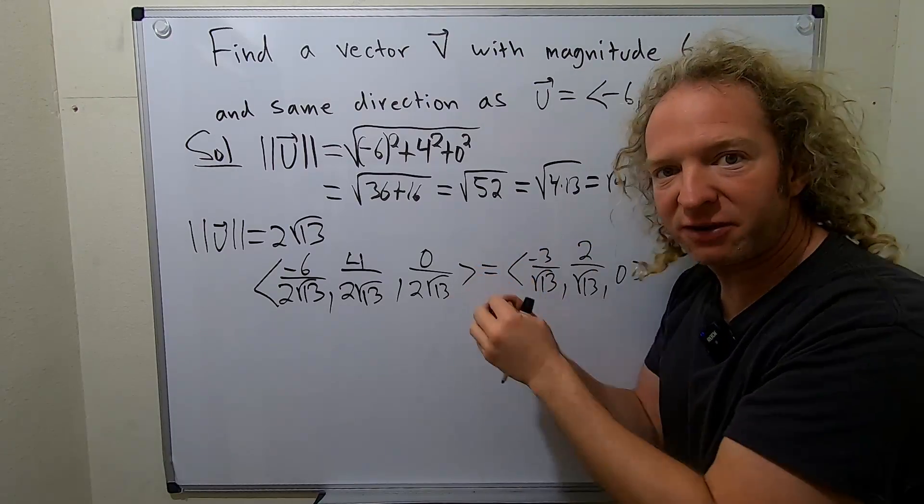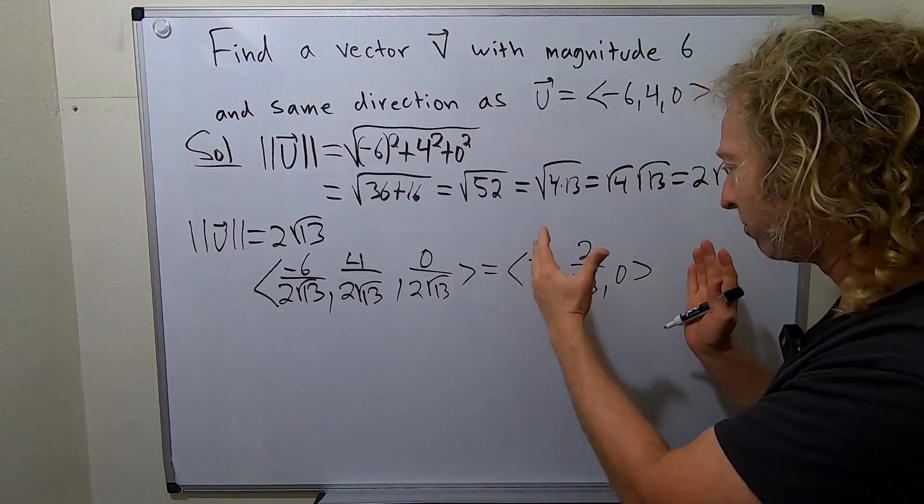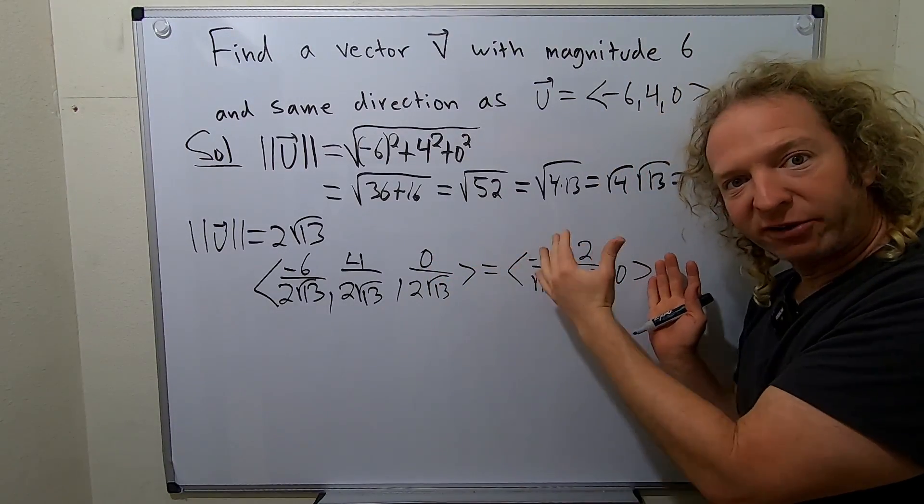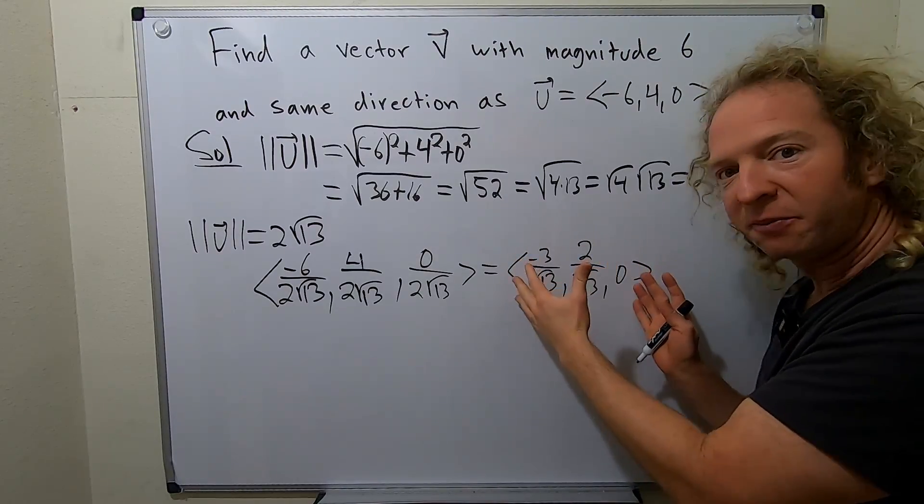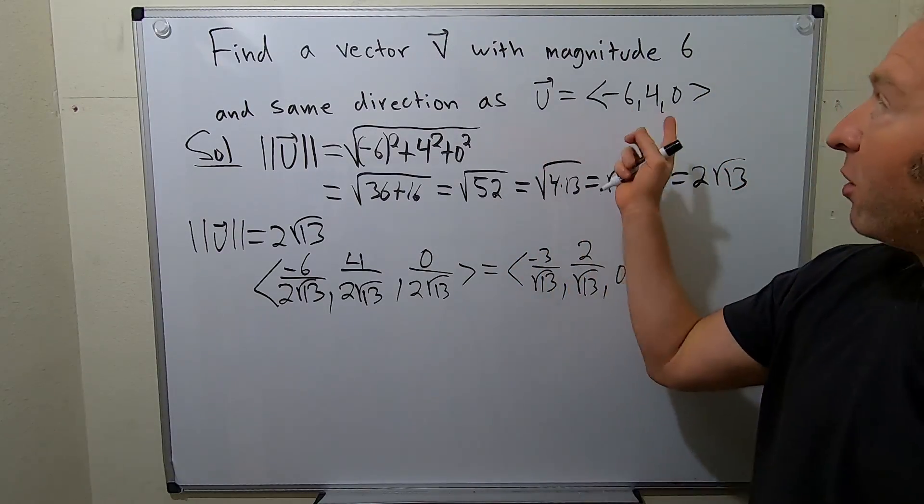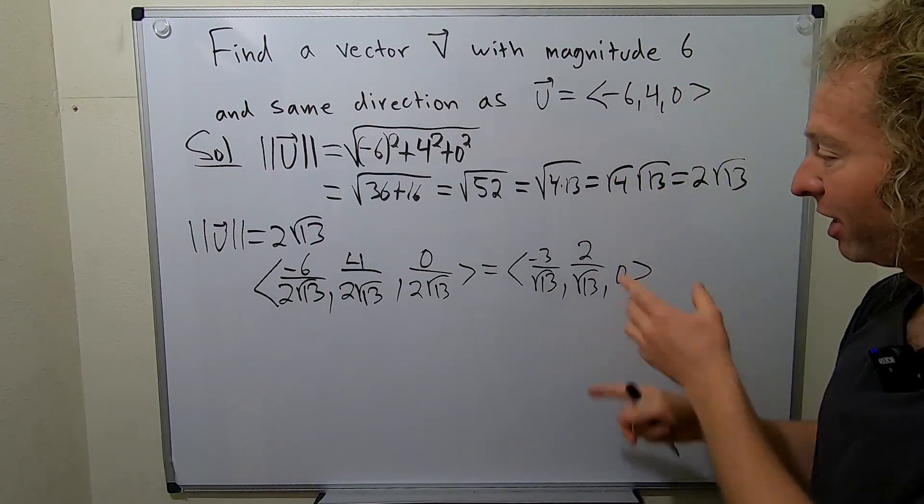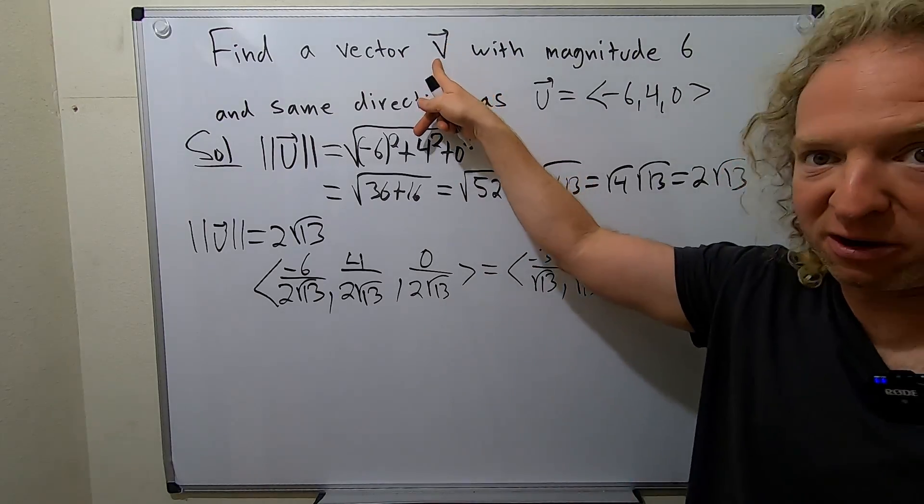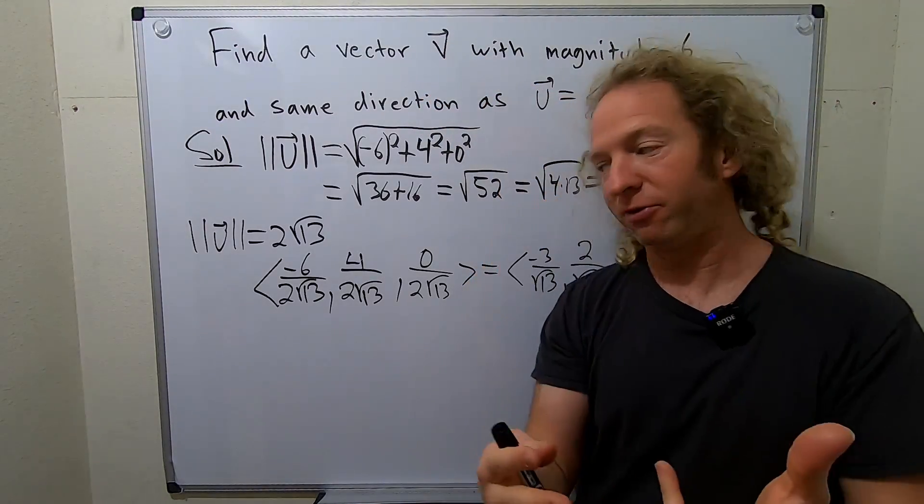So because this has length 1, we can multiply it by a positive number to stretch it or shrink it. So if we multiply this by 1 half, it'll have length 1 half. If we multiply it by 20, it'll have length 20. So all we have to do now is multiply it by 6. So just multiply each of these components by 6, and that'll be our answer. That will be our vector v.